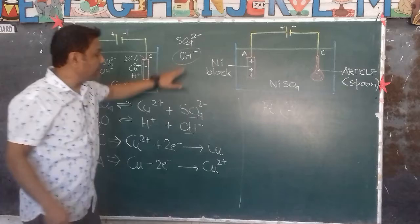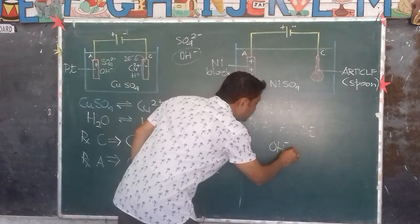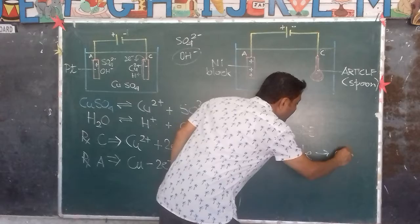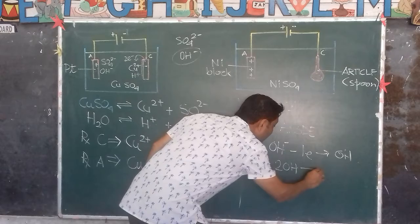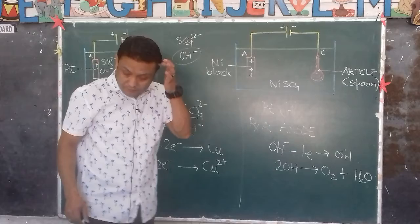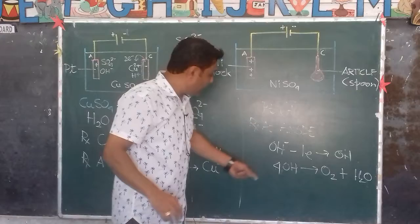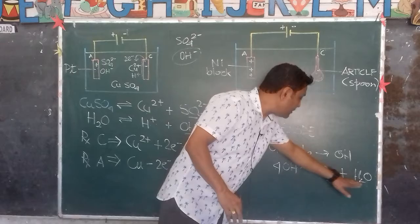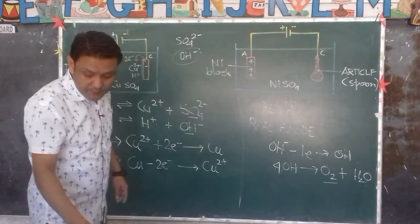OH⁻ ions lose one electron and become OH. Since OH is very unstable, 4OH combines to produce oxygen and water: 4OH⁻ → 2H₂O + O₂. The water goes back to the electrolyte. So oxygen is the product at the anode when a platinum electrode is used.